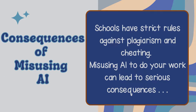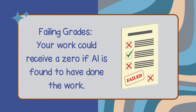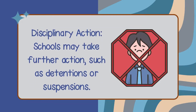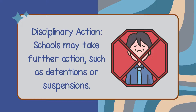Consequences of Misusing AI. Schools have strict rules against plagiarism and cheating. Misusing AI to do your work can lead to serious consequences, like failing grades. Your work could receive a zero if AI is found to have done the work. Schools may also take further disciplinary actions such as detentions or suspensions.